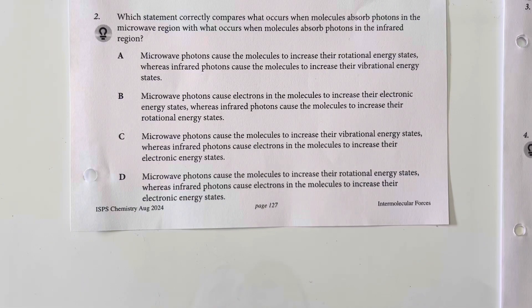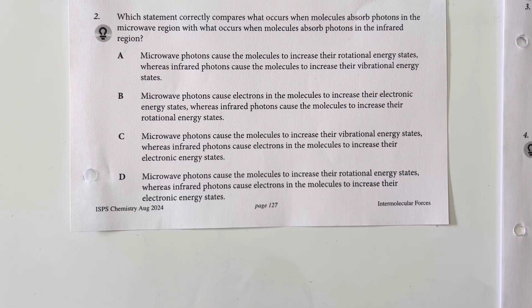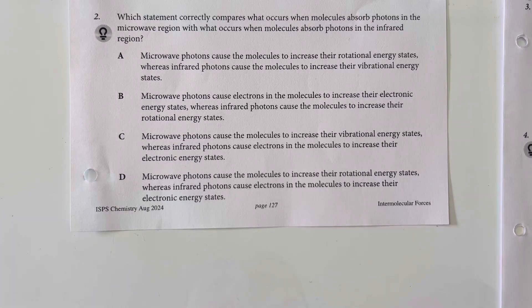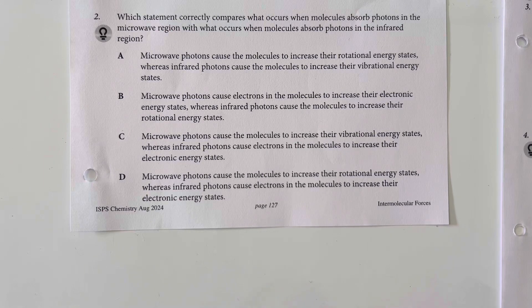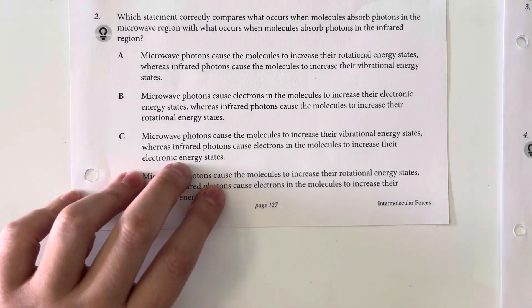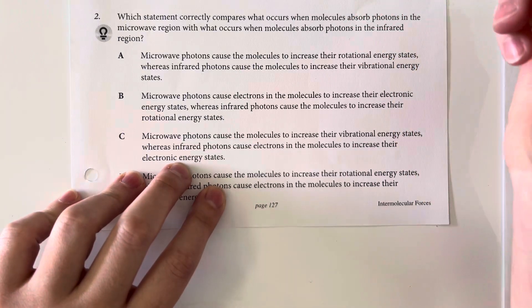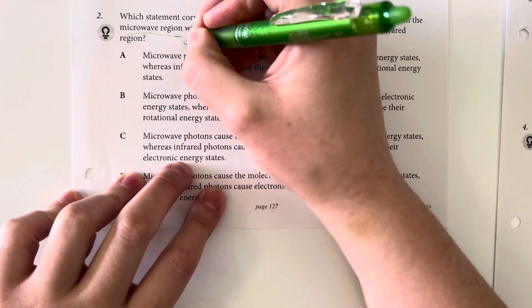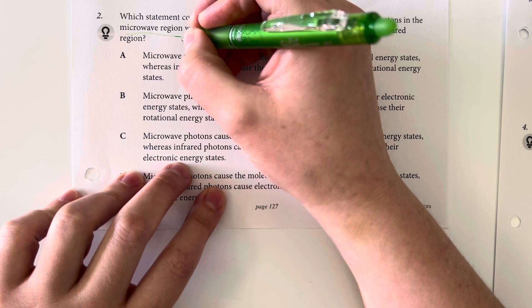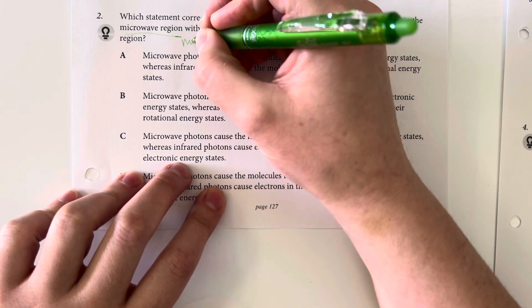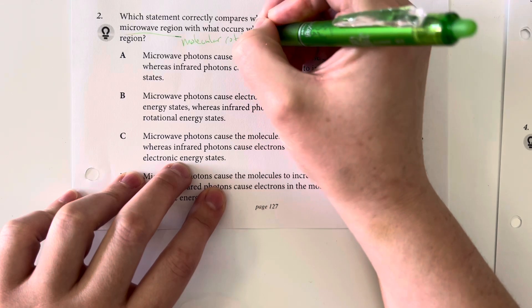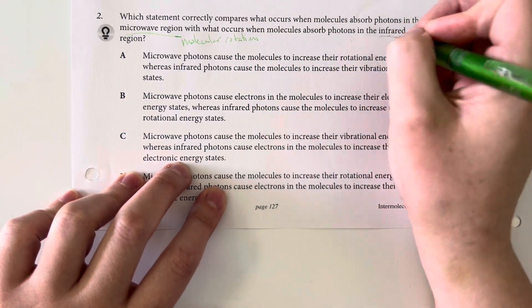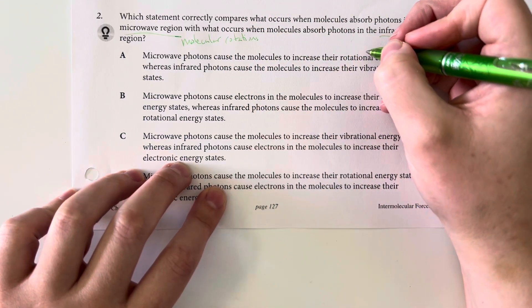Which statement correctly compares what occurs when a molecule absorbs photons in the microwave region with what occurs when molecules absorb photons in the infrared region? So, for microwaves, we are identifying the molecular rotations. And for infrared, we are identifying functional groups.